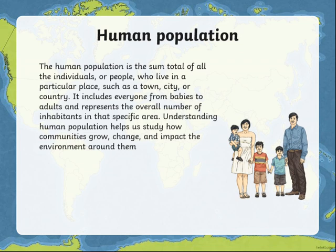Firstly, we're going to talk about Human Population. The Human Population is the sum total of all the individuals or people who live in a particular place, such as a town, city, or a country. It includes everyone, from babies to adults, and represents the overall number of inhabitants in that specific area. Understanding Human Population helps us to study how communities grow, change, and impact the environment around them.